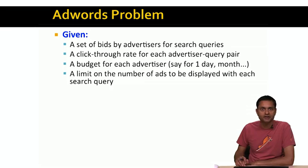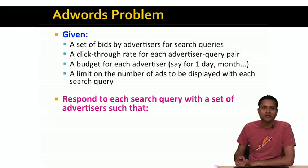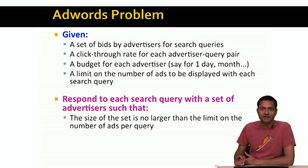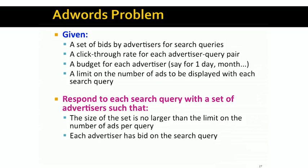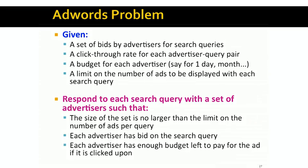Let's just assume that it's a daily budget. Finally, there's a limit on the number of ads to be displayed with each search query — this limit could be one, two, or three. We need to respond to each search query with a set of advertisers such that the size of the advertiser set is no larger than the limit. Each advertiser shown has actually bid on the query, and if the ad is shown and somebody clicks on it, the advertiser should have enough budget left to pay. So we don't want to show ads from advertisers who don't have budget to pay for clicks.